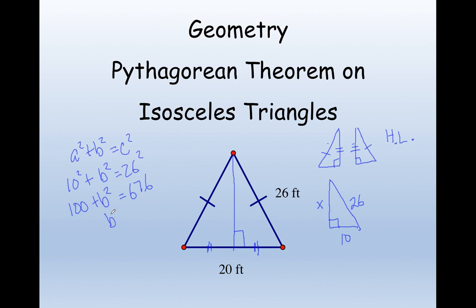So I subtract 100 from both sides, 576. Square root of 576 is 24. So this is going to be 24.